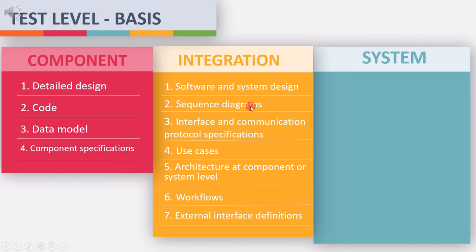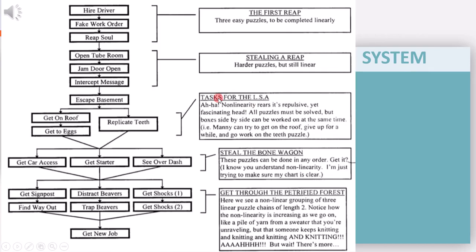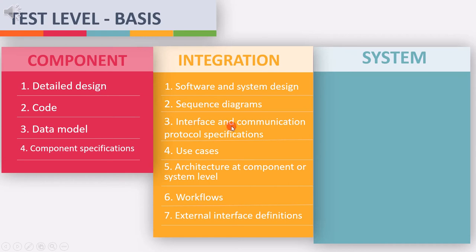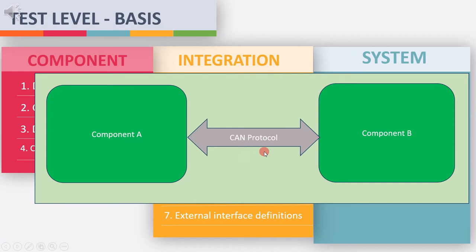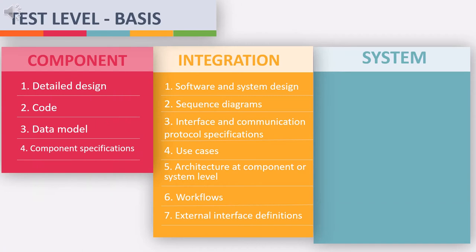The next requirement is sequence diagram. A sequence diagram helps the tester understand how data flows through the interfaces. The third requirement is interface and communication protocol specifications. If a project uses any specific protocol for sending or receiving data, then the specification related to those protocols is required for testing. The fourth requirement is use cases — if we know how the interfaces will be used by the user, we can prepare better integration test cases.